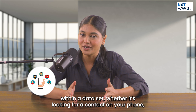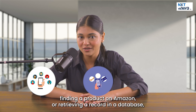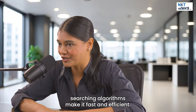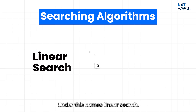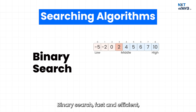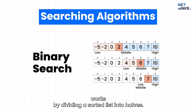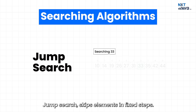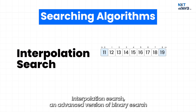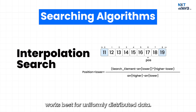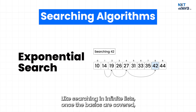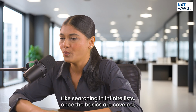Searching algorithms find a specific piece of data within a dataset — whether looking for a contact on your phone, finding a product on Amazon, or retrieving a record in a database. These include linear search, the simplest method that checks each element one by one; binary search, fast and efficient, which works by dividing a sorted list into halves; jump search, which skips elements in fixed steps then does a linear search; interpolation search, an advanced version of binary search that works best for uniformly distributed data; and exponential search, used when the size of data is unknown, like searching in infinite lists.